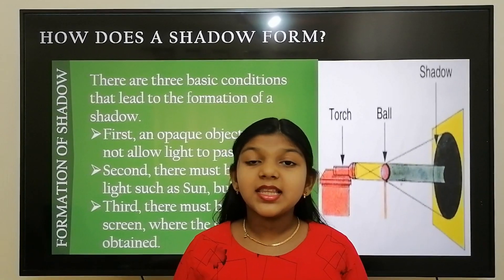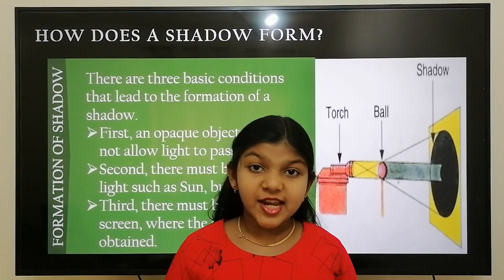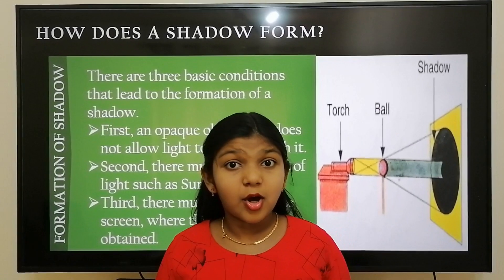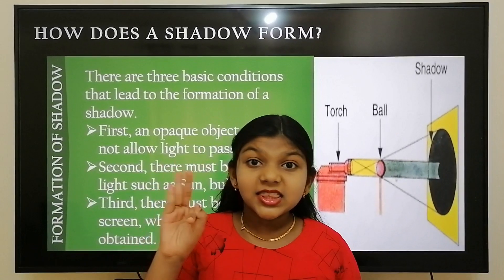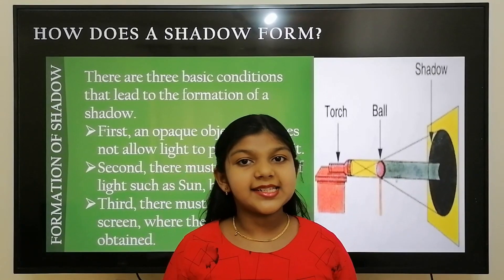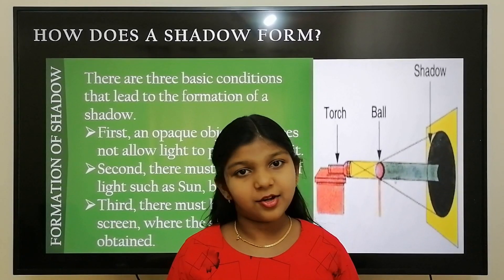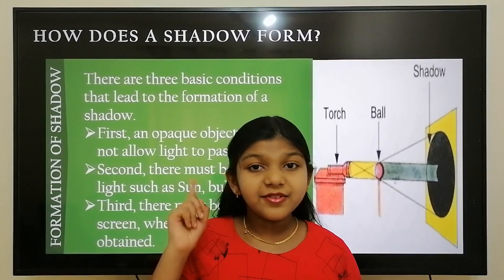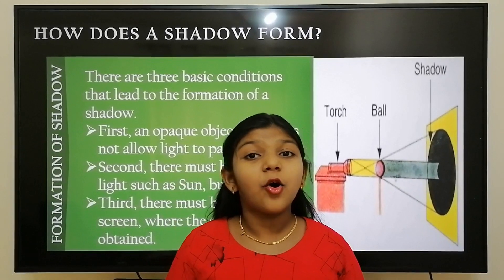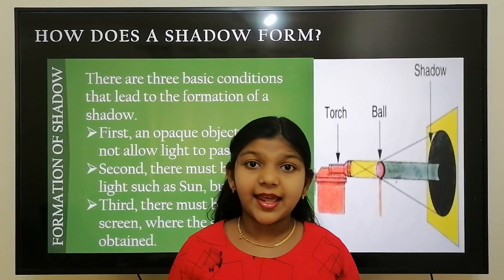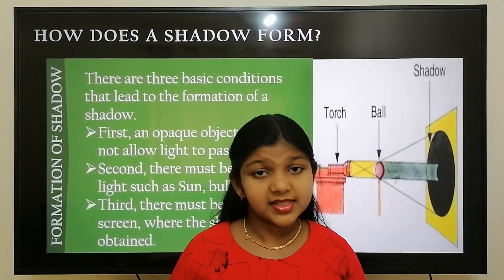Now let's see the formation of shadow — how does the shadow form? There are three basic conditions that lead to the formation of shadow. First, we need an opaque object that does not allow light to pass through it.